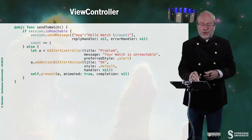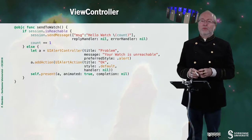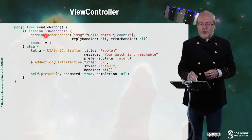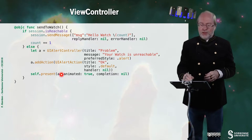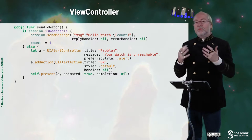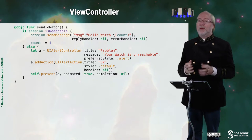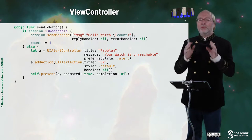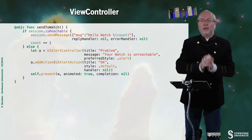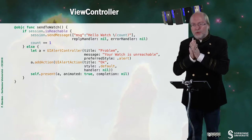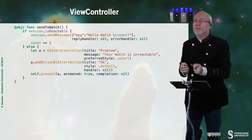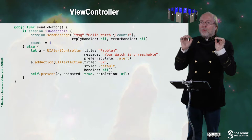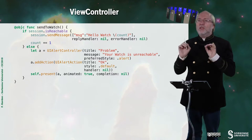Let's have a look at the 'send to watch' element. If the session is reachable, then you can send the message and increment the counter. Otherwise, you just display a problem. isReachable is a boolean that is true if the counterpart on the Apple Watch is running — meaning your application is running. Not only the fact that the watch is connected, but that the application is reachable.